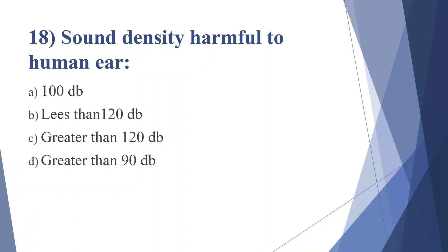Eighteenth question: sound density harmful to the human ear — option A: 100 decibel, option B: less than 120 decibel, option C: greater than 120 decibel, option D: greater than 90 decibel. Answer is option D, greater than 90 decibel.